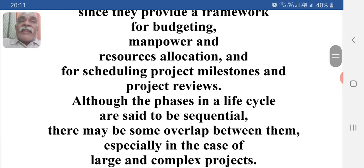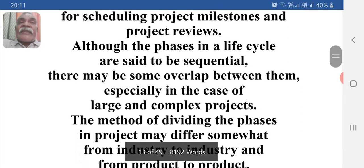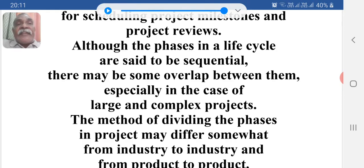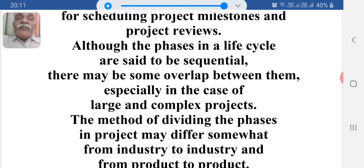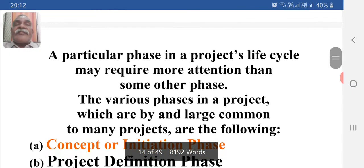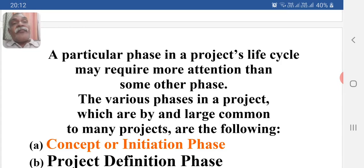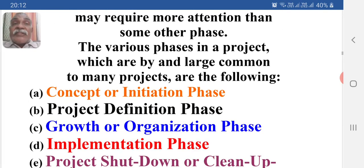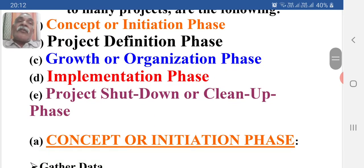Although the phases in a life cycle are said to be sequential, there may be some overlap between them, especially in the case of large and complex projects. The methods of dividing the phases may differ somewhat from industry to industry and from product to product. Also, the attention to be paid to a project during its lifetime varies from phase to phase. The various phases common to many projects are: conception (conceptual or initiation phase), project definition phase, growth or organization phase, implementation phase, and project shutdown or cleanup phase.